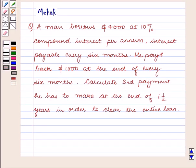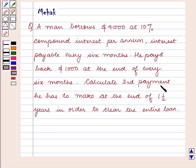Hello and welcome to the session. In this session we are going to discuss the following question: A man borrows $4,000 at 10% compound interest per annum. Interest is payable every 6 months. He pays back $1,000 at the end of every 6 months. Calculate the third payment he has to make at the end of 1.5 years in order to clear the entire loan.